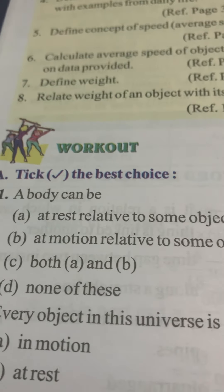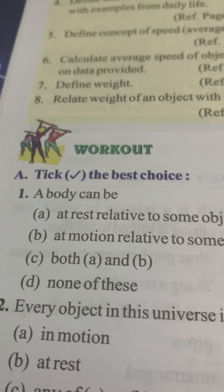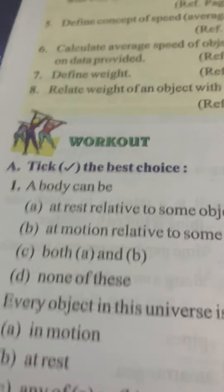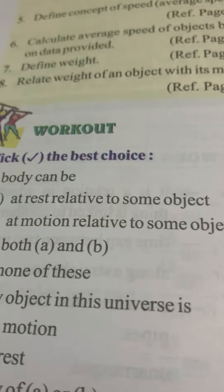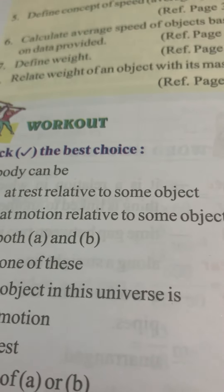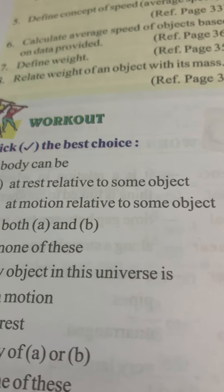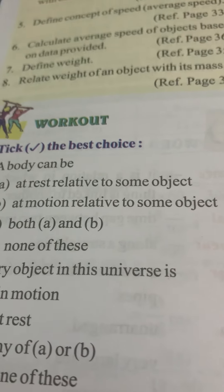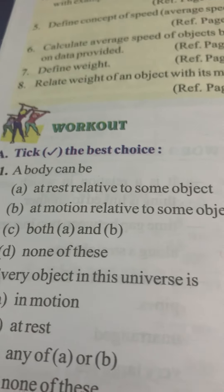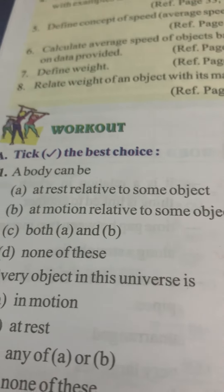Now we come to the back exercises of chapter 2. Take the best choice. First: a body can be at rest relative to some object; at motion relative to some object; both A and B; none of these.